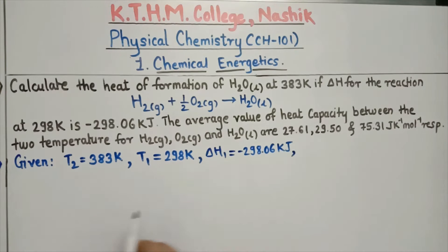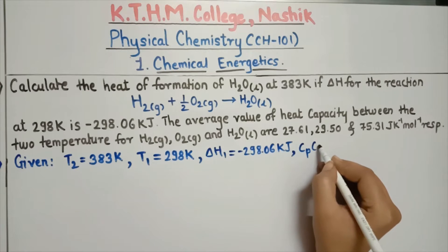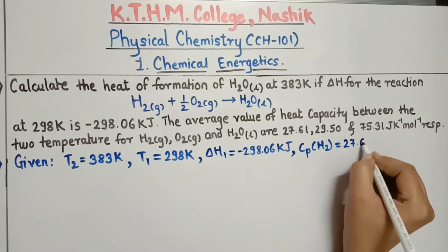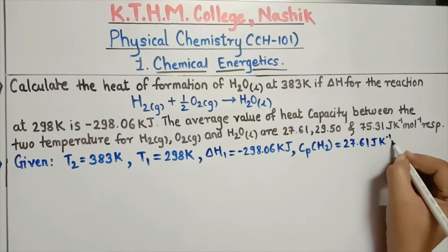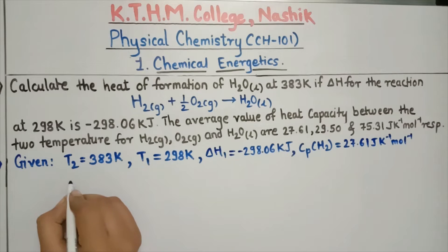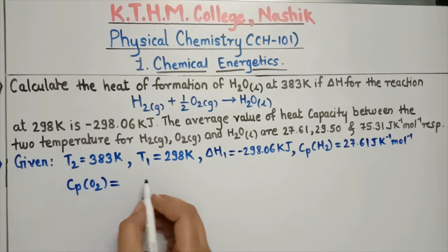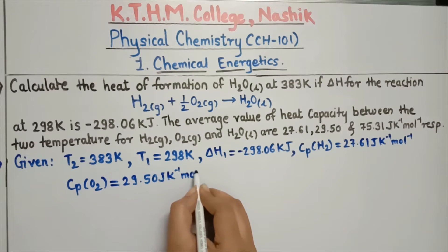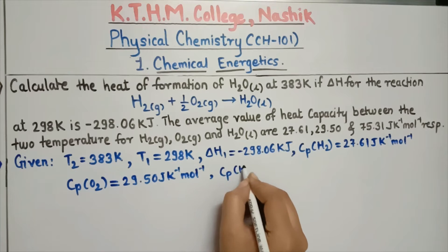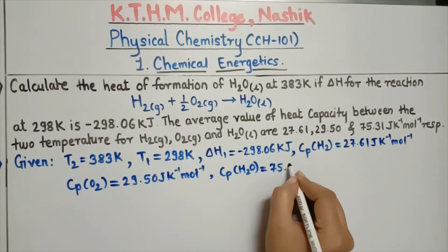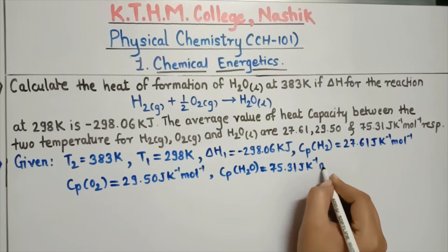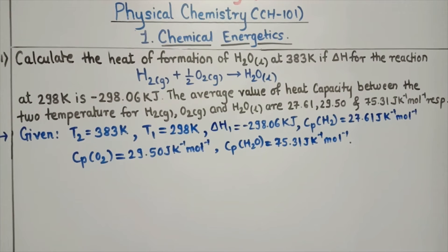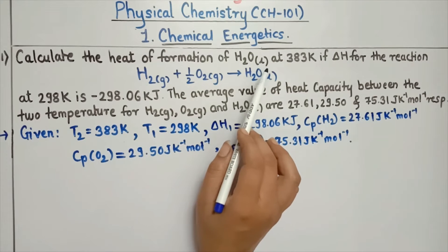Heat capacities are given: Cp of H₂ is equal to 27.61 joule per Kelvin per mole, and Cp of H₂O is equal to 75.31 joule per Kelvin per mole. We have to find the heat of formation, that is delta H₂ at 383 Kelvin.